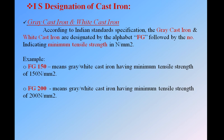Now we start with IS designation of cast iron. IS means Indian standards. We have four types of standards in the world: IS (Indian standard), BS (British standards), AISI (American Iron and Steel Institute standards), and SAE (Society of Automotive Engineers standards). We follow Indian standards for our country.